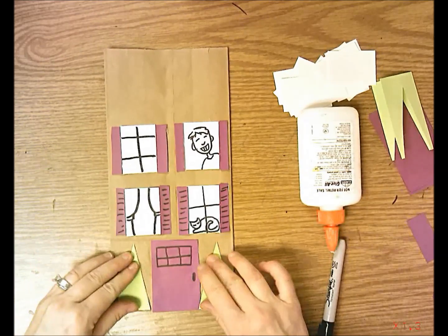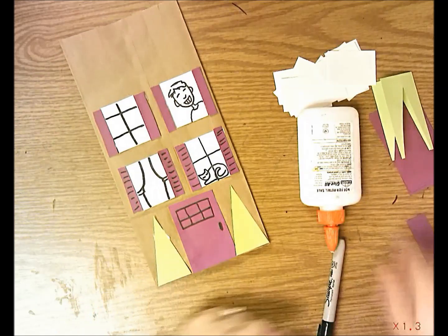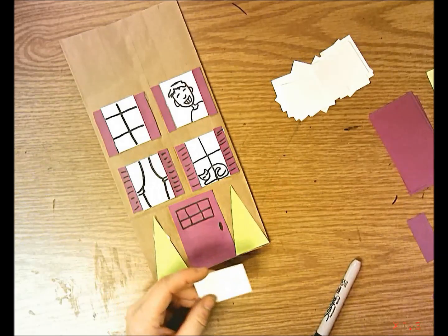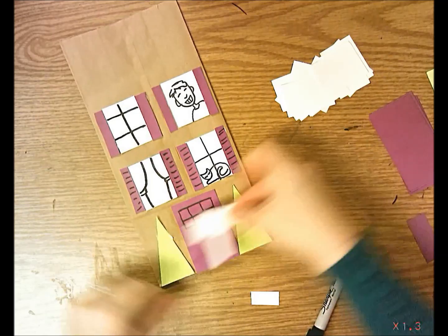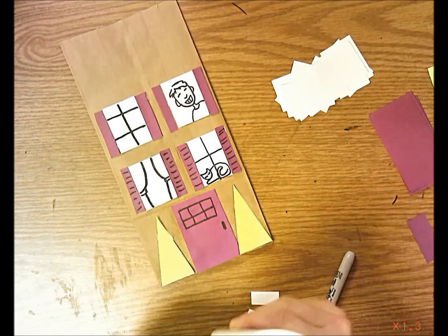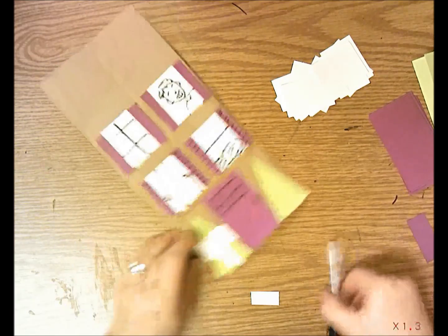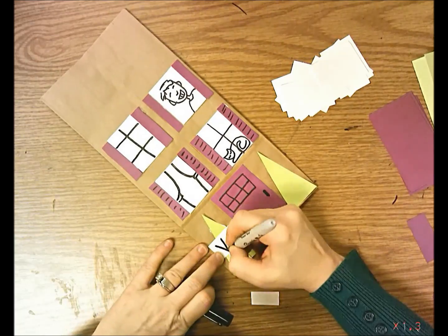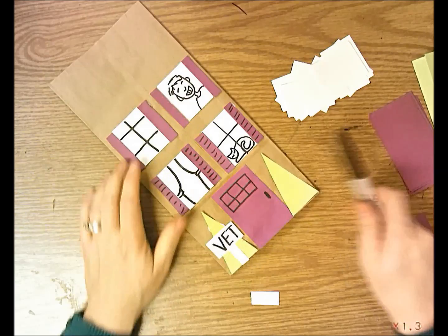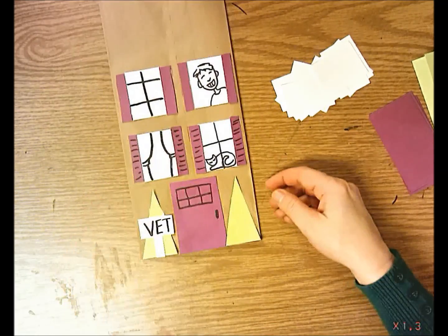You could add a little sign. Maybe this is a veterinarian or restaurant and not just a traditional house. You could take one of the white papers and put a little sign out in front. I think maybe I'll make this a veterinarian since I have a cat in the window. I'm going to trim this and put vet. Now I glued before I drew which I don't want you to do. Always draw on the paper first and then glue. That's the front of my building.